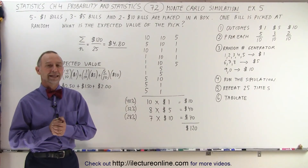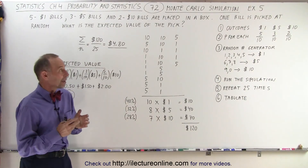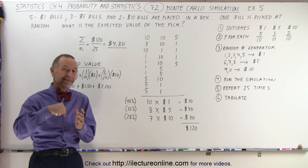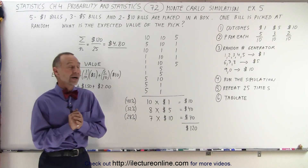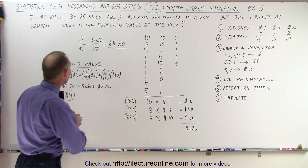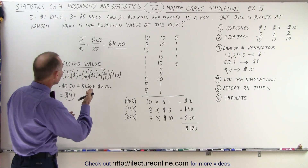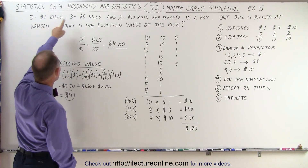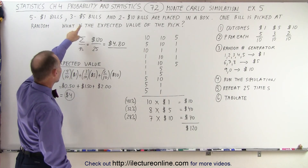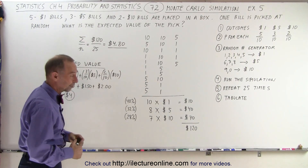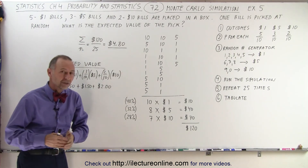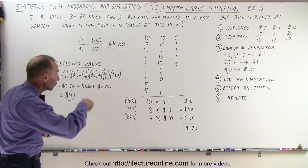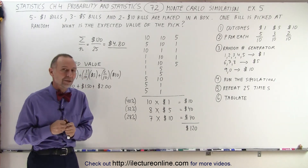Welcome to iLectureOnline. Our next example, we'll grab a box, but instead of putting keys in the box, we'll put bills in the box. We have some one dollar bills, some five dollar bills, and some ten dollar bills. Five of the one dollar bills, three of the five dollar bills, and two of the ten dollar bills. They're all placed in a box, so we have a total of ten bills in there, and we're going to pick a bill at random.